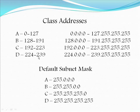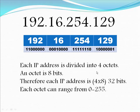Class D addresses are 224 through 239. Each class has its own default subnet mask. Class A is 255.0.0.0, Class B is 255.255.0.0, and Class C is 255.255.255.0. Class D is all maxed out with four 255s. Each address is divided into four octets, and an octet is eight bits, therefore each address is 32 bits total. Each octet can range from zero to 255.